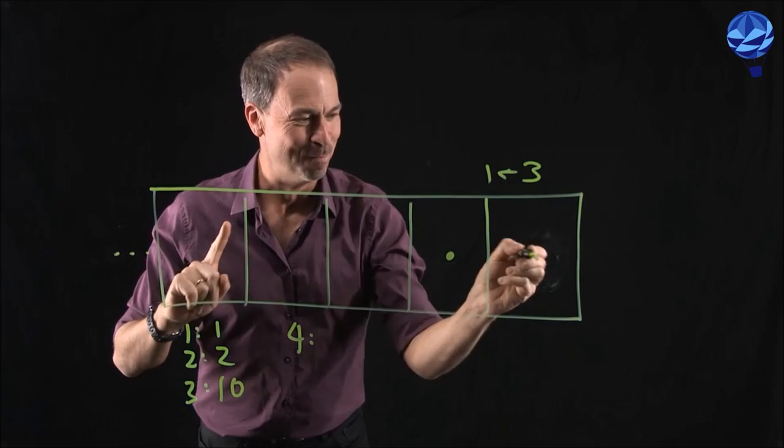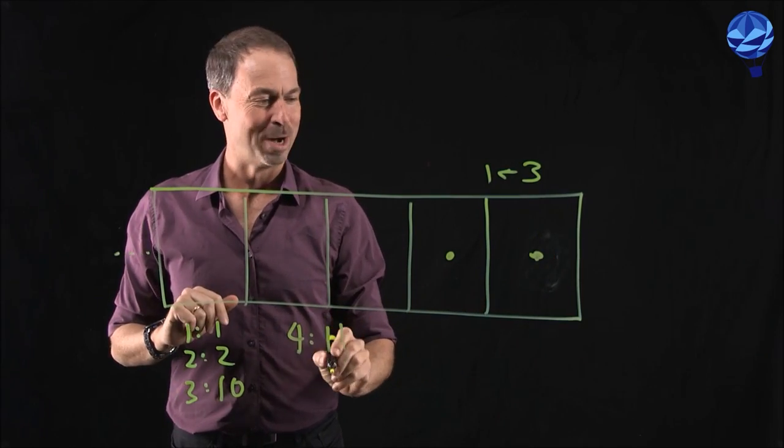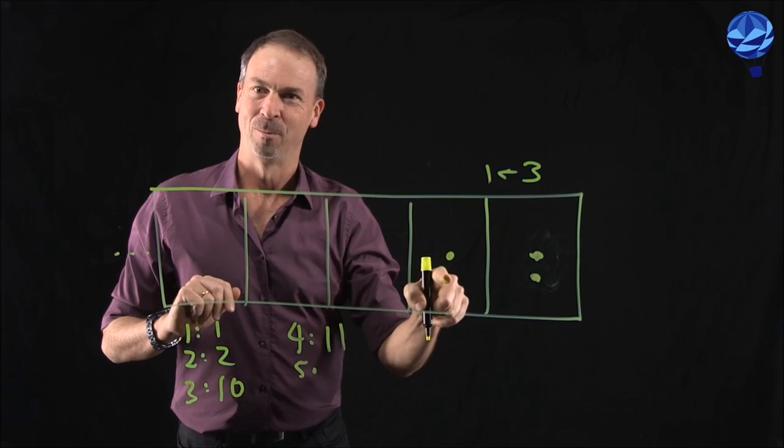Four. Rightmost box. Zoom. Fine. That's one one. Five. Zoom. One two.